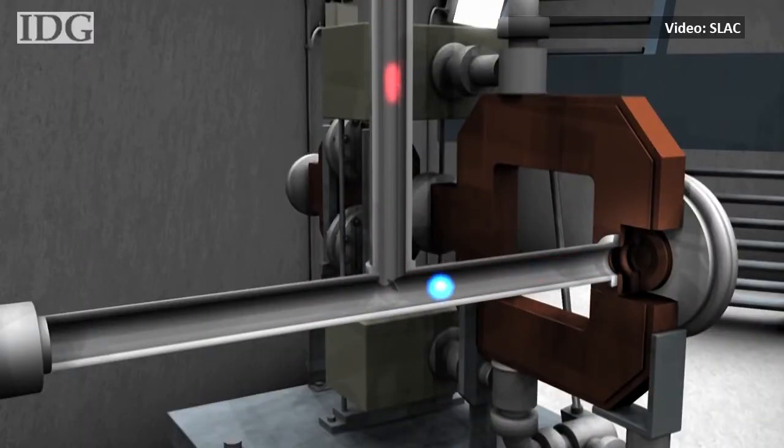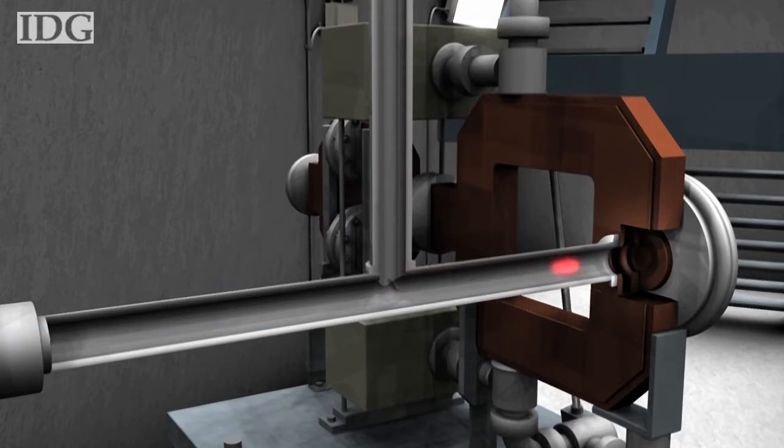Here's how it works. A laser generates a pulse of UV light that travels down and strikes the surface of a copper plate. This turns the light into a burst of electrons, seen in blue, which enter the linear accelerator.